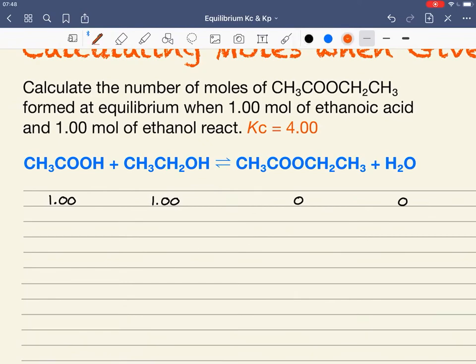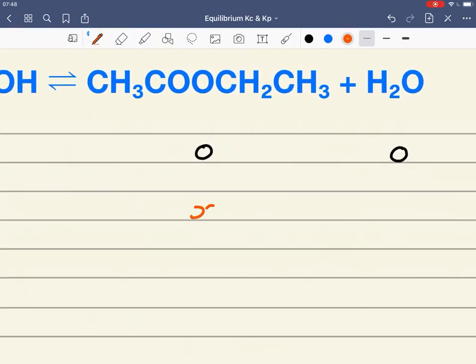I've been asked to work out the number of moles of the ethyl ethanoate at equilibrium, and we're going to call that value X. That X is the number of moles of ethyl ethanoate at equilibrium, which is the one I want to work out.